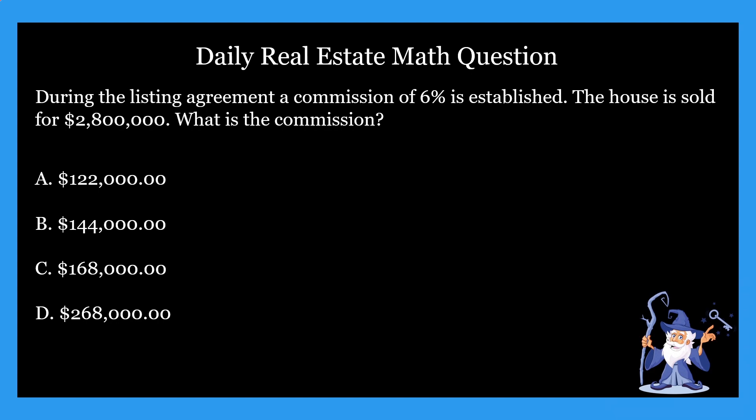All right. So hopefully you guys came up with your answer on this one. So what is the correct answer? Well, it's going to be C — it's $168,000. Could you imagine getting that commission check? Oh my goodness gracious, that'd be amazing.